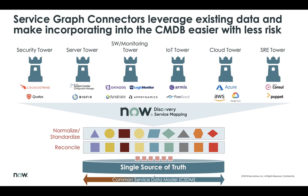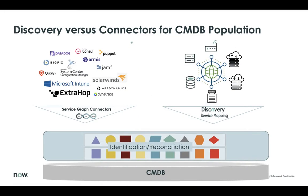You'll see a lot of the connectors in the first release in September of this year, and then more coming over the next several releases. But we always get asked: you've got discovery, you've got connectors — when should you use one over the other? And that's what I'm really here to talk about: the things that should be considered as you start to put together a CMDB population strategy, whether to bring data in via connectors and/or discovery. Most of the time, when talking data center, we see a combination of both at most customers.